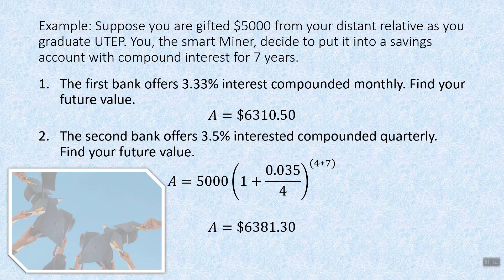Not bad, right? After seven years, we gained a little bit. So we keep this answer up here. The second bank offers better interest at 3.5% interest, but it's only compounded quarterly. So we don't earn it quite as often. Find our future value.